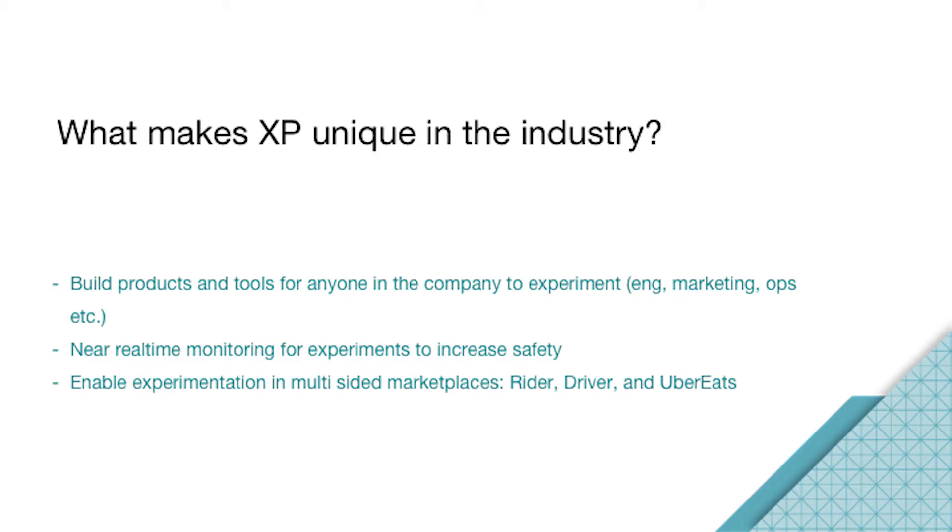What makes experimentation platform at Uber unique in the industry? As a software engineer, he or she can not only launch experiments on our platform but also launch a complete new feature to 100% of the audience in the world. Second, we provide nearly real-time monitoring for experiment health to increase safety. We enable the experimentation platform in three apps: Rider, Driver, and Uber Eats. This is very difficult because we have to make sure that the traffic of these three apps does not conflict with each other.